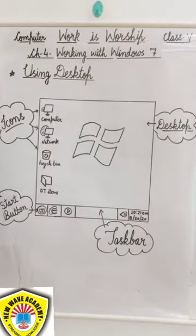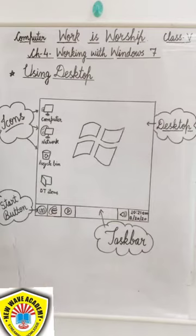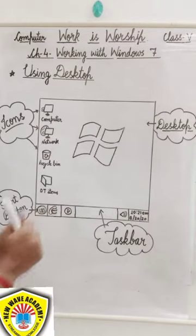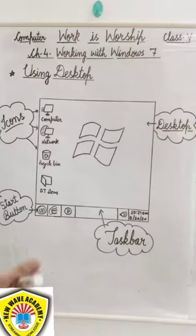As you know, desktop is the combination of two words: desk and top. We can also say the word desktop is derived from the real-life desktop — the top of our working study table, where we may find a pen stand, notepad, calculators, files, etc.